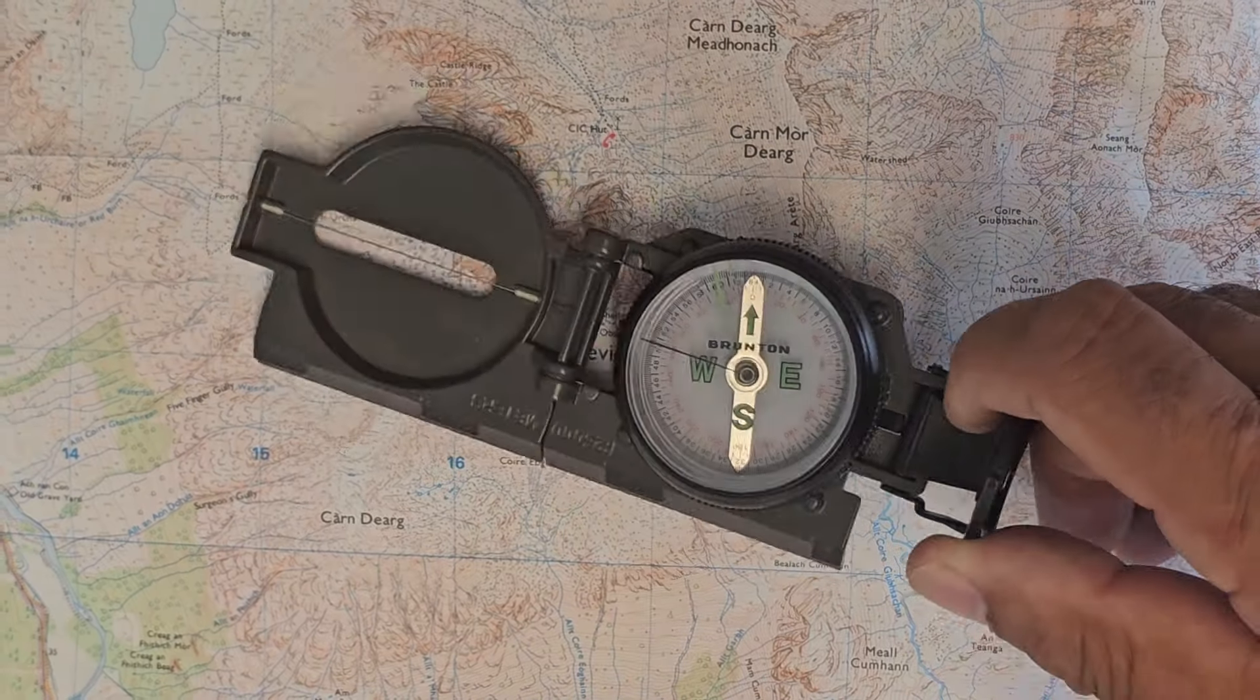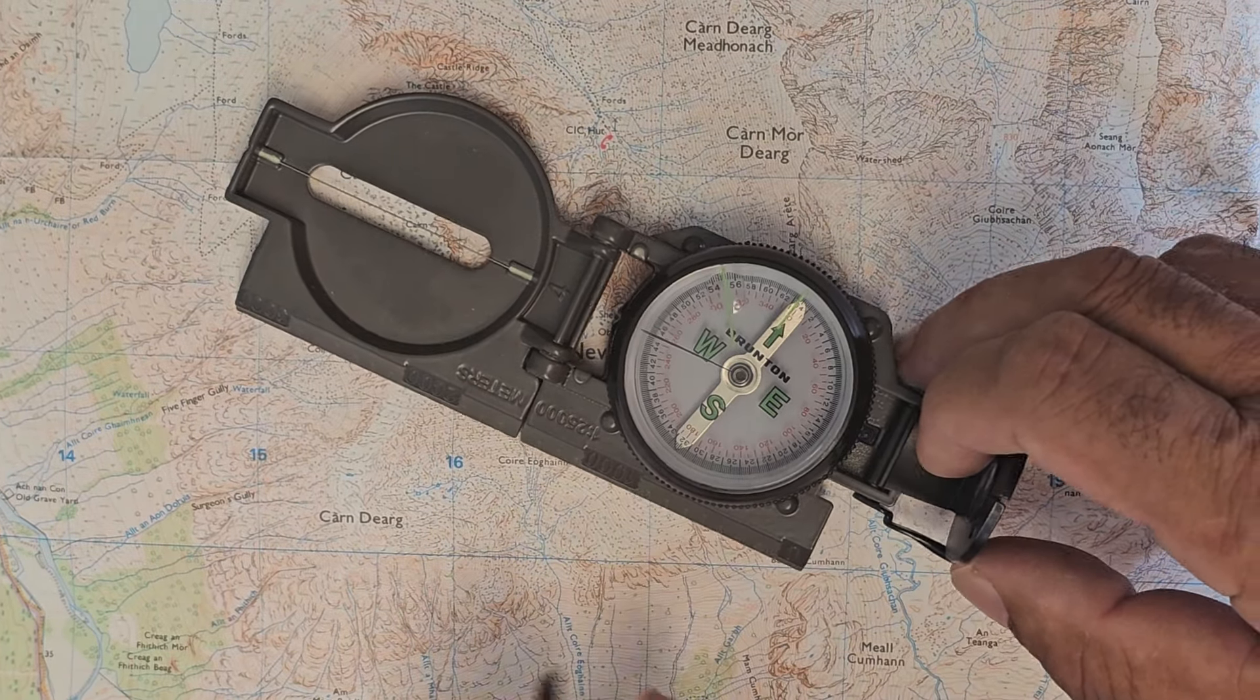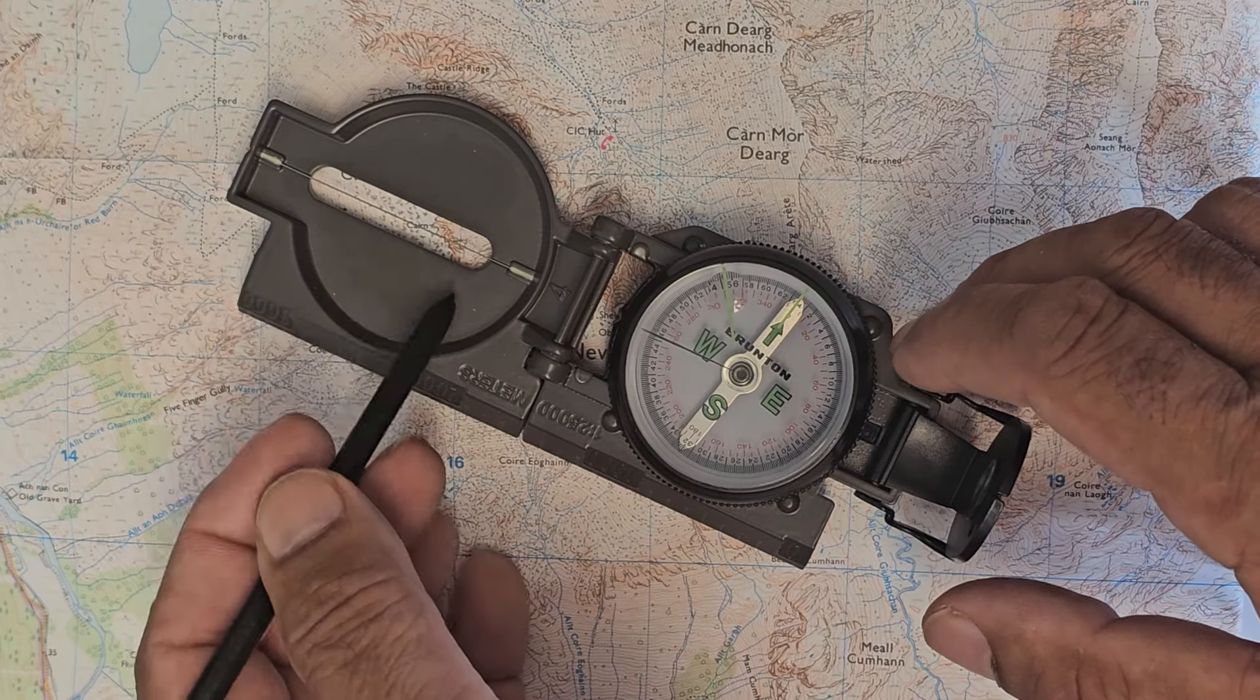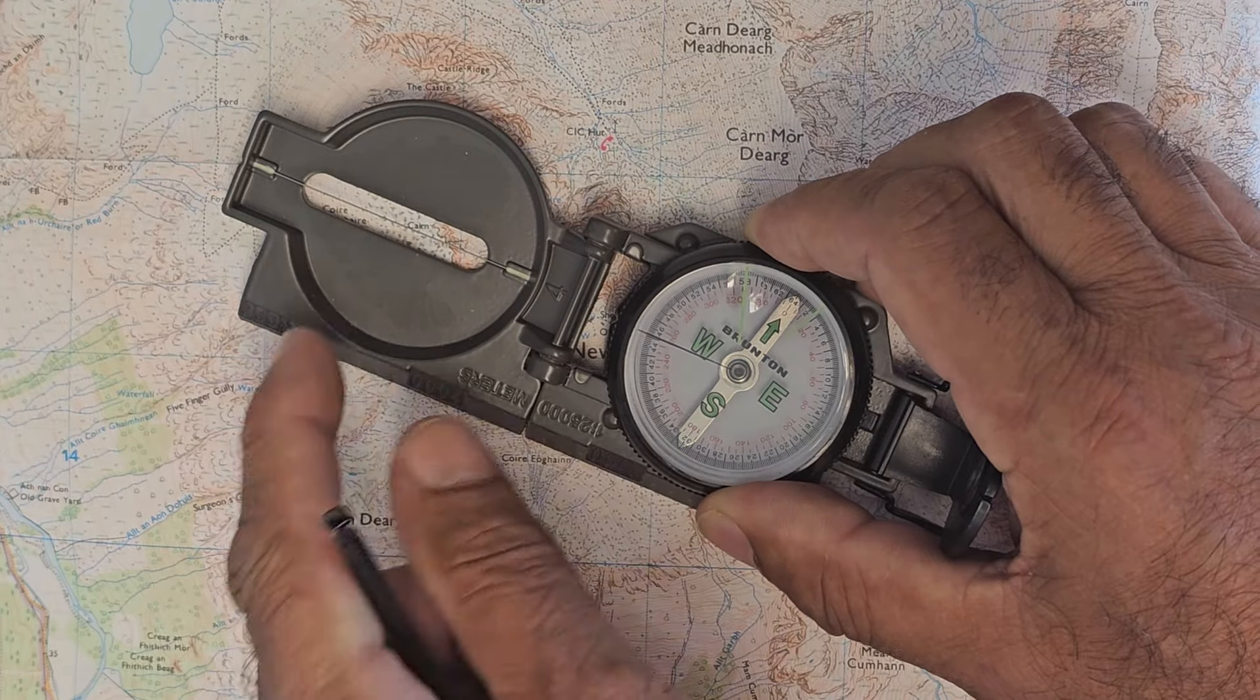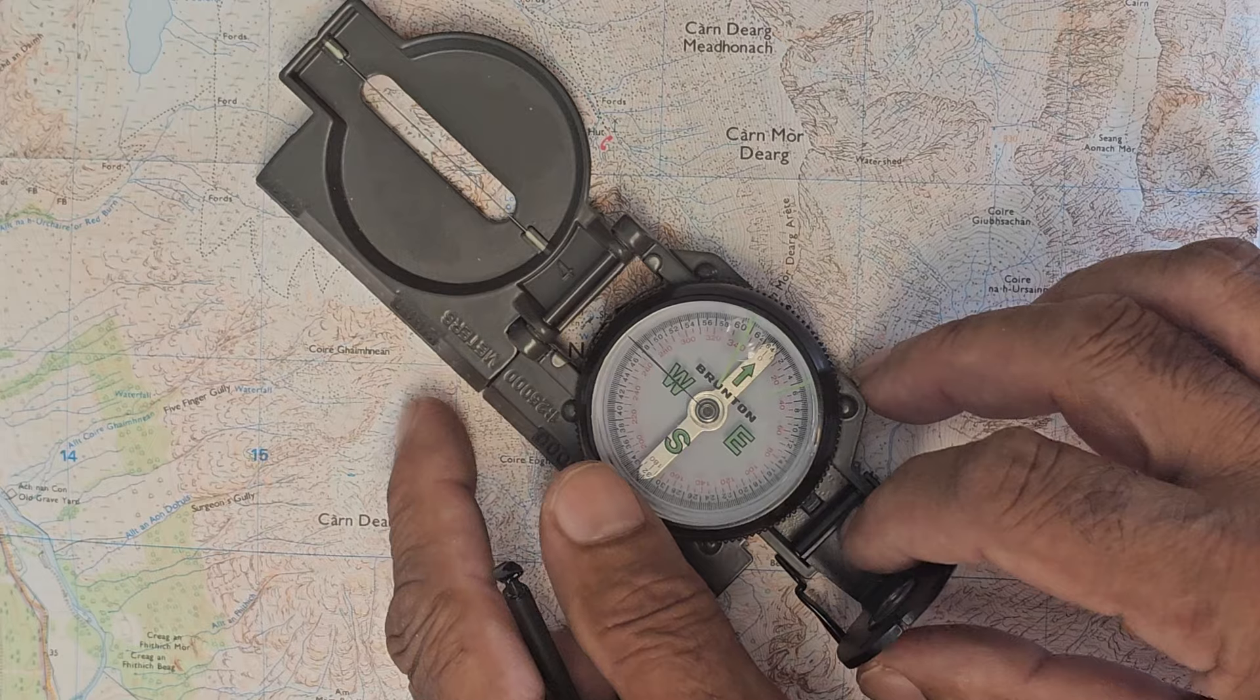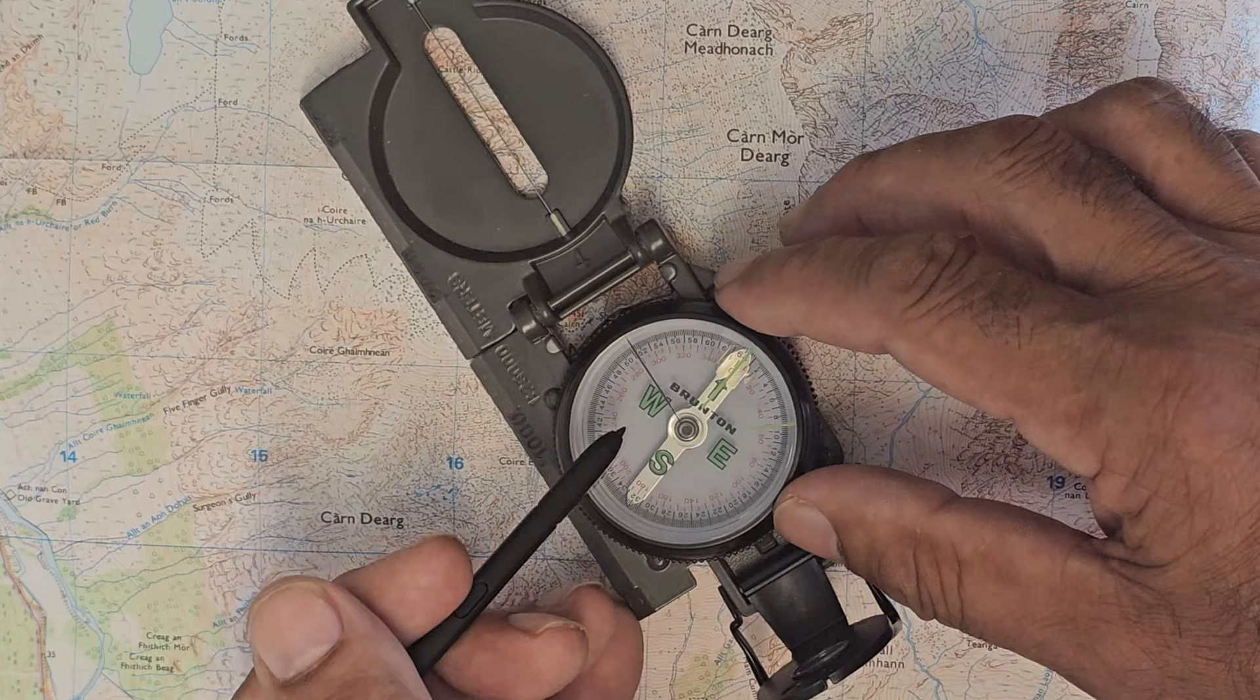To take a bearing from a map, put the compass on the map, it doesn't matter which way the map is pointing, with the straight edge touching the start and the destination. Make sure that the wire is pointing in the direction of travel. Rotate the dial until the long green line is pointing up the map or north. Next, rotate the compass until the long green line is directly over the north indicator and then read the bearing from underneath the index line.